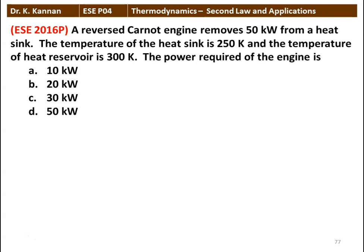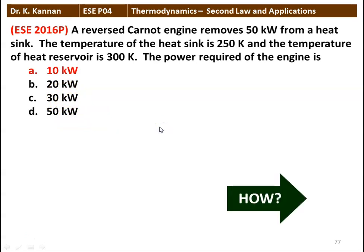First question: a reversed Carnot engine removes 50 kilowatts from a heat sink. The temperature of the sink is 250 Kelvin and the temperature of the heat reservoir is 300 Kelvin. The power required by the engine is: 10 kilowatt, 20 kilowatt, 30 kilowatt, or 50 kilowatt. The answer is 10 kilowatt. We will see how in the next slide.